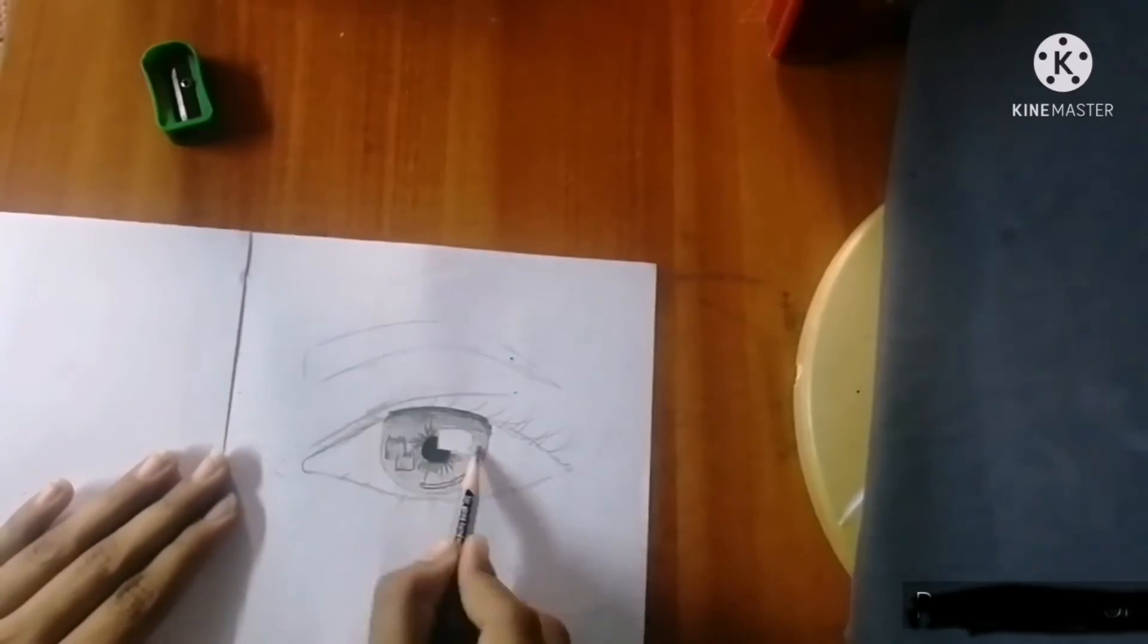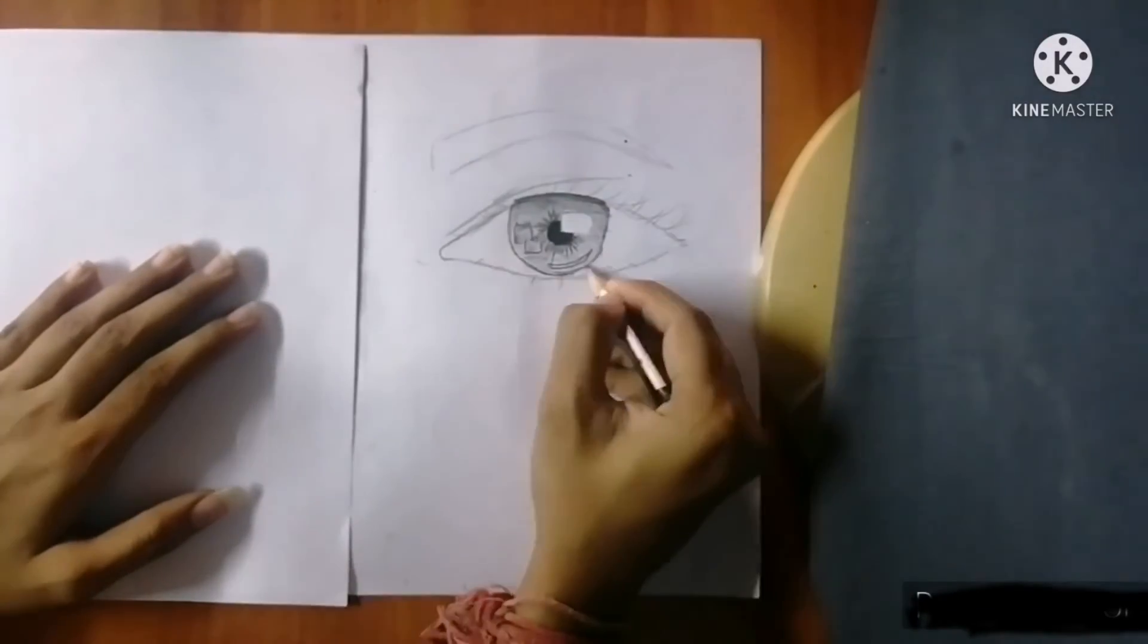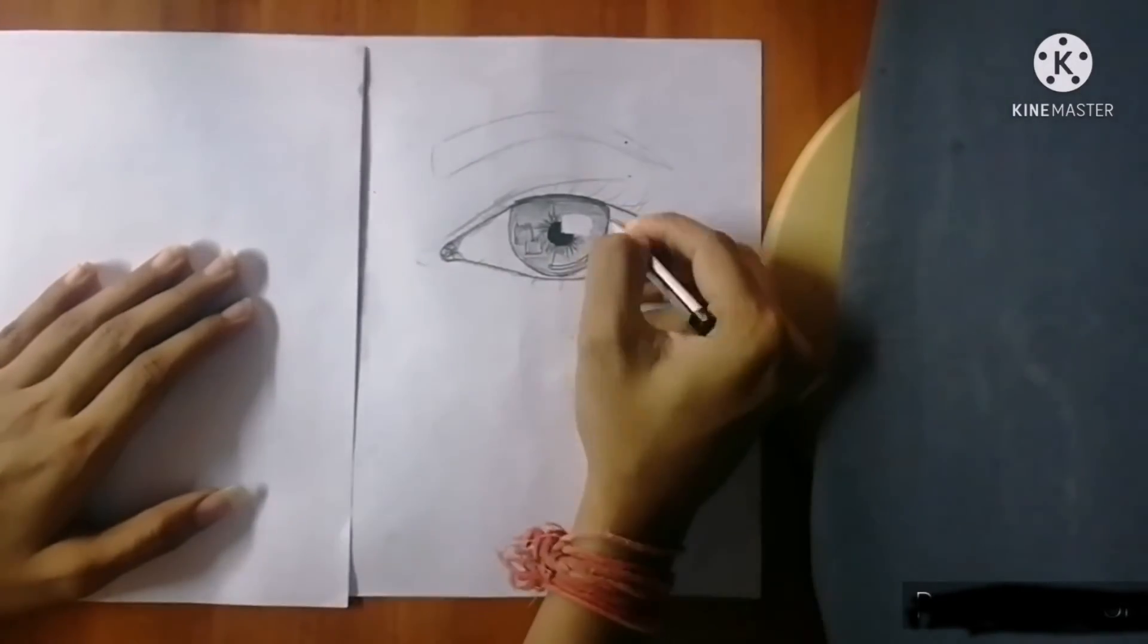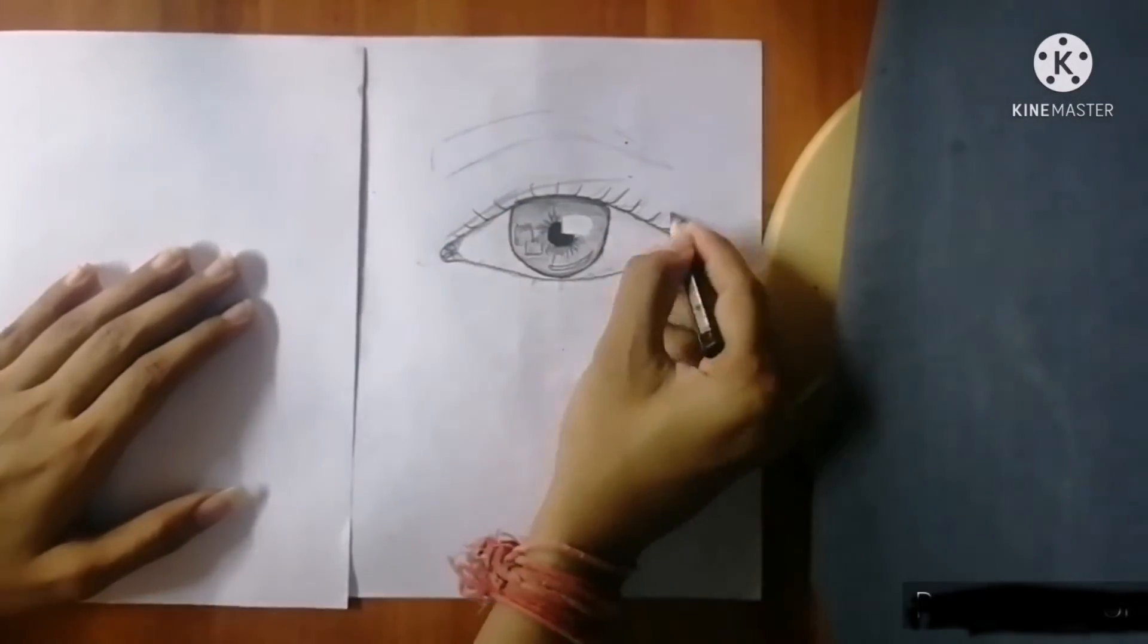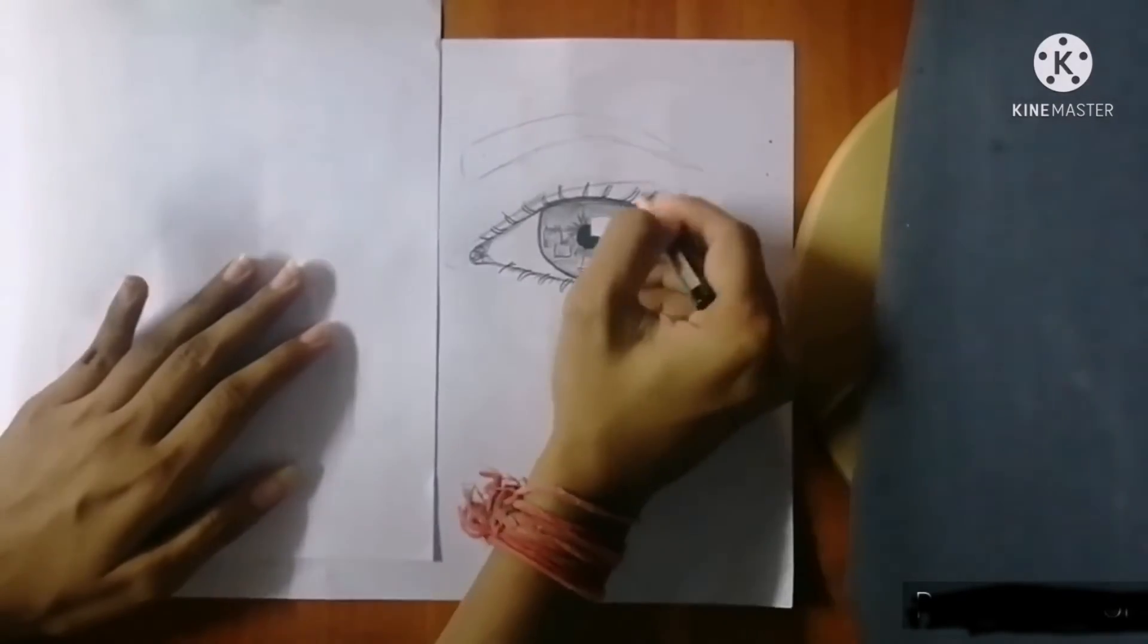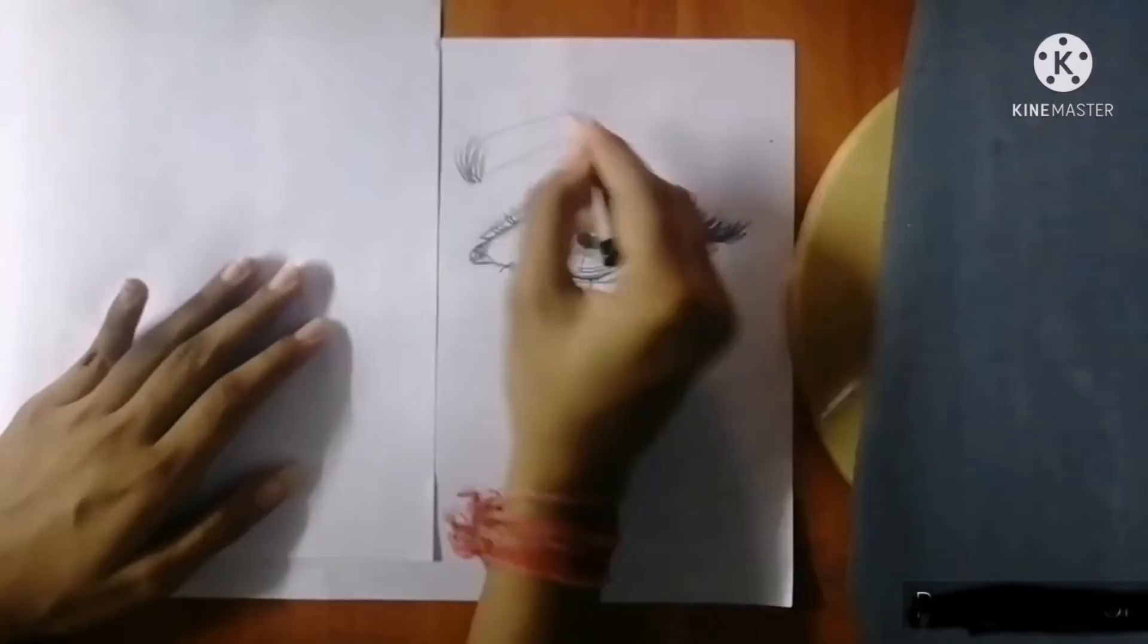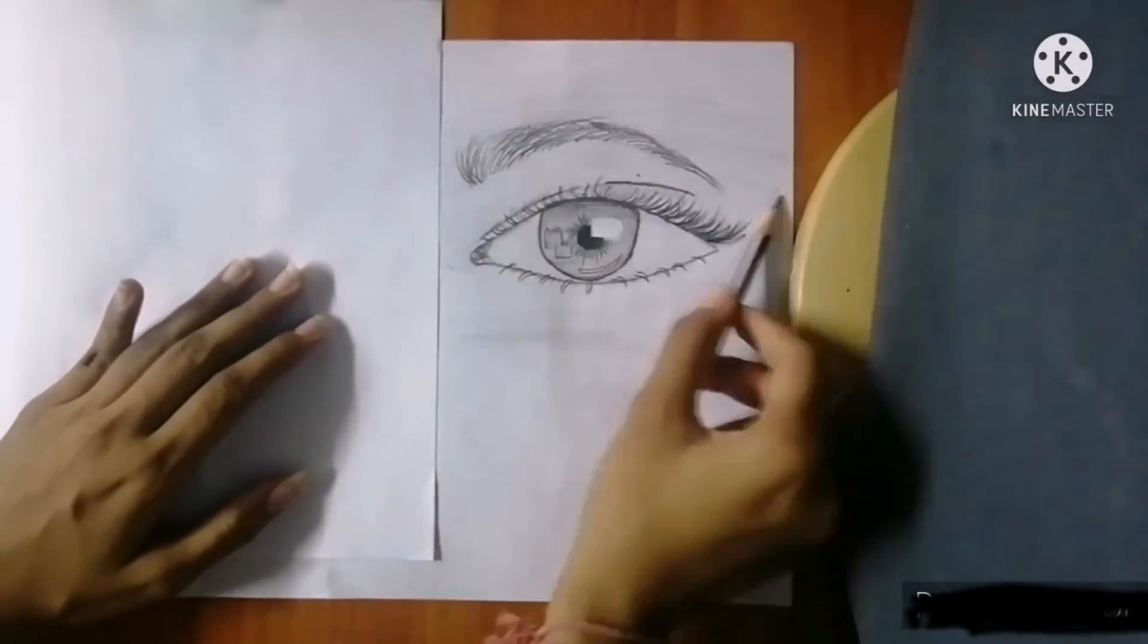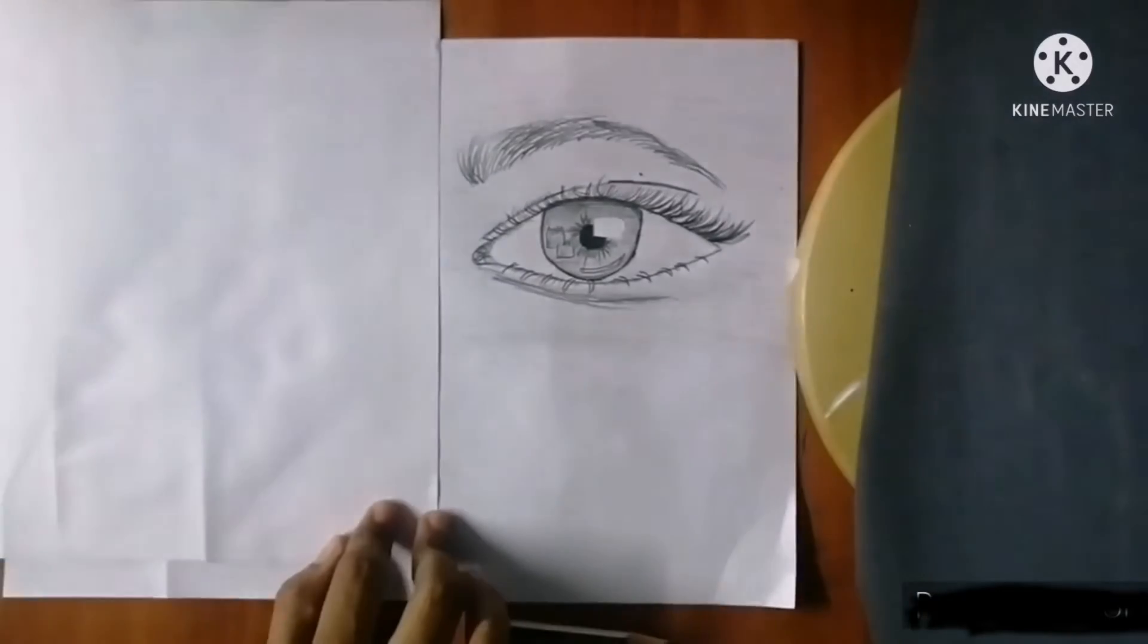The white area won't stay completely white. We will shade it a little gray. I'll do this shading with a drawing pencil and blend it in a little bit.